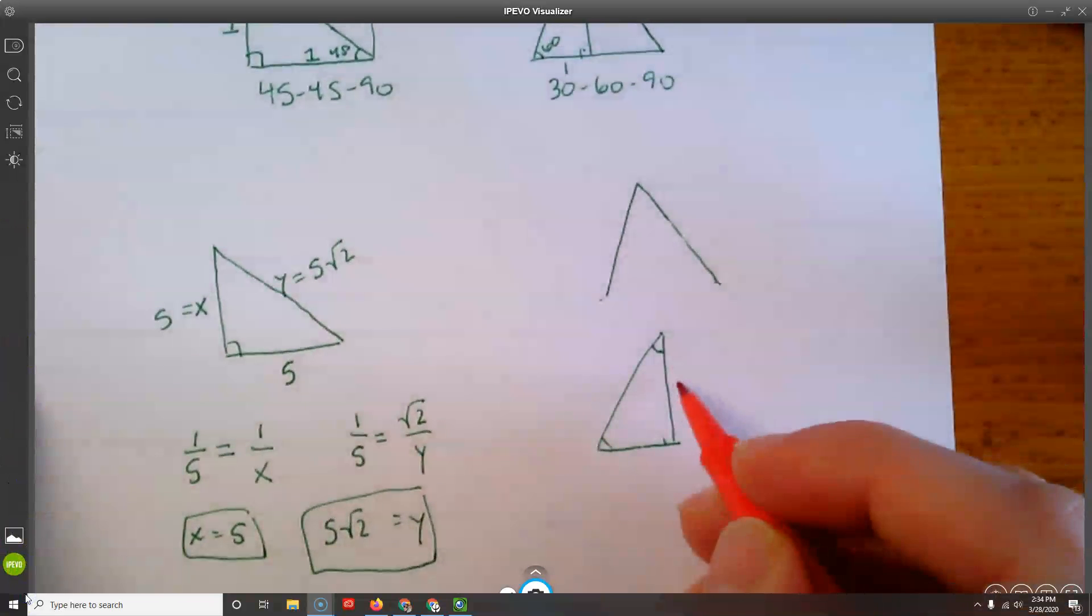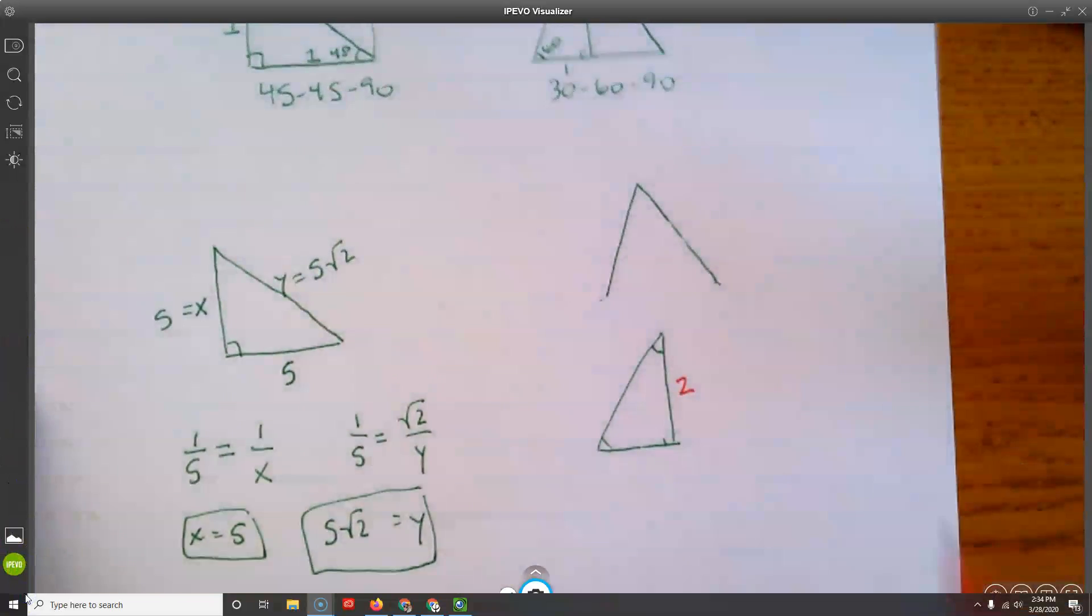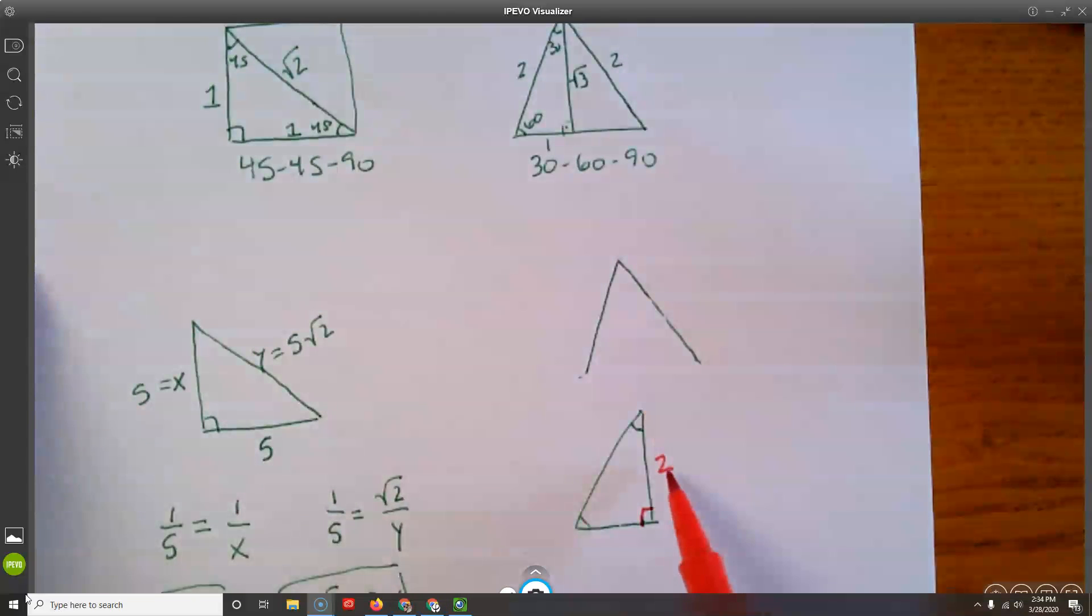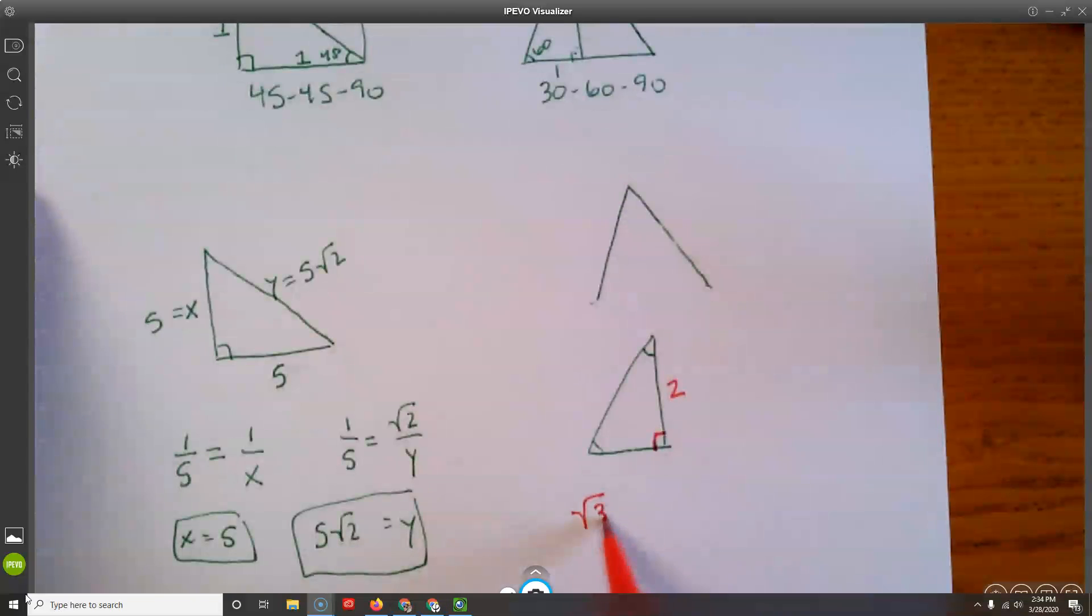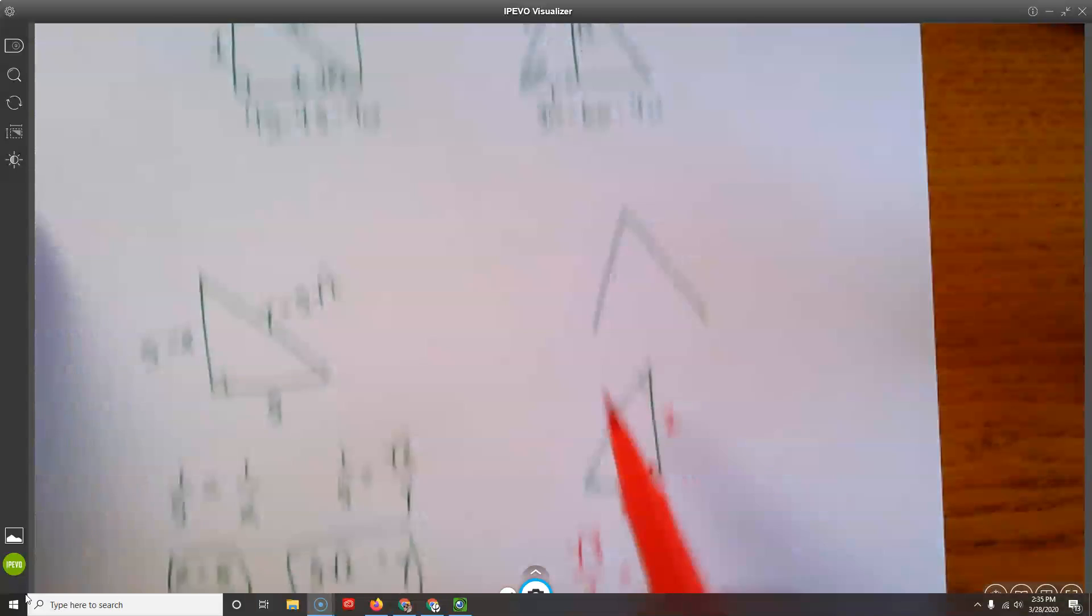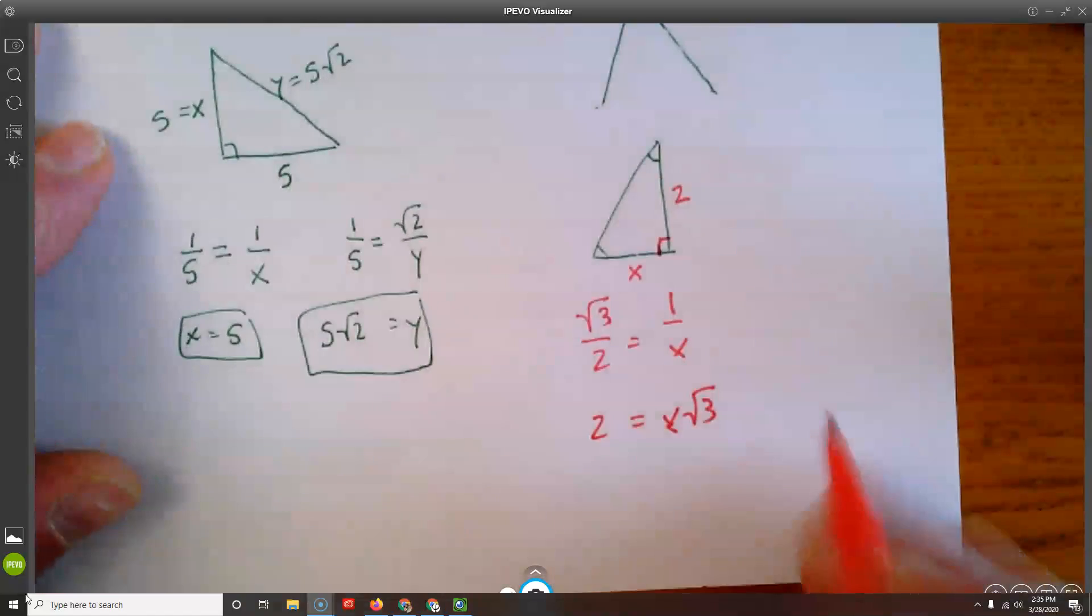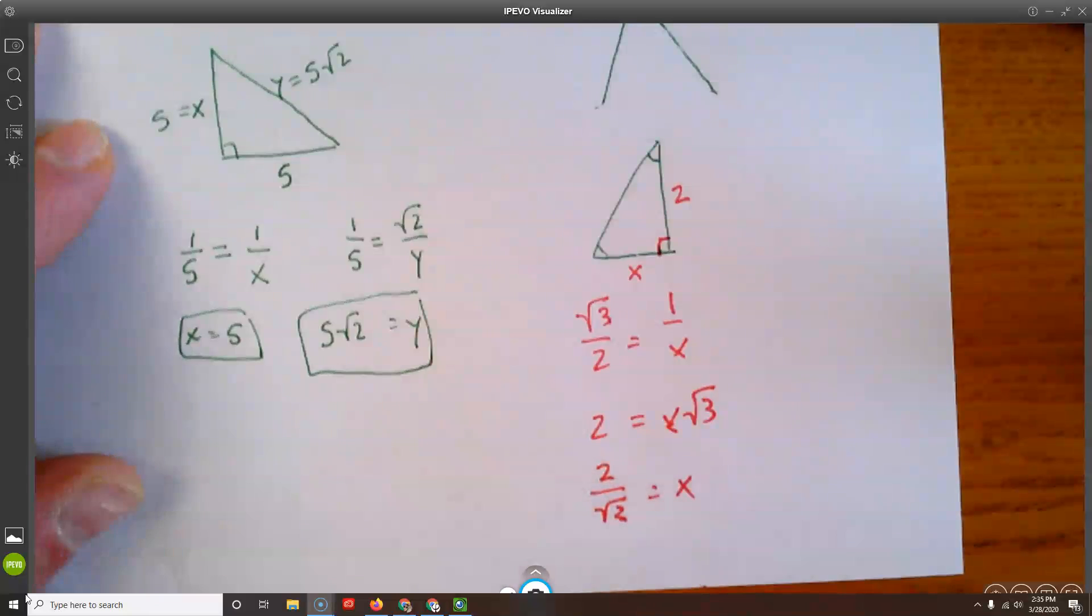So say I knew that this was like a 2. So I set up my proportions. Well, I know that square root of 3 to 2 should equal 1 to x. So then I'll multiply and I get 1 times 2 is 2 equals x times square root of 3. And we'll divide by square root of 3 on both sides. And I get 2 over square root of 3 equals x.